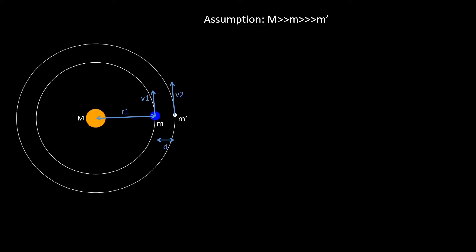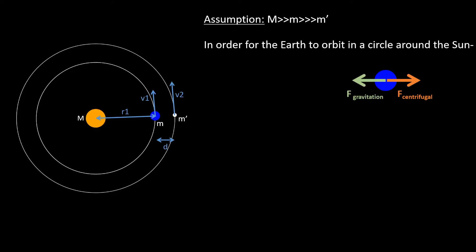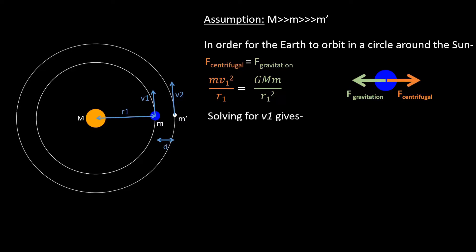As a consequence of that, the satellite will have no appreciable influence on the Sun-Earth system, making it evolve in time almost unaffected by the satellite. For the Earth to orbit in a circle around the Sun, the centrifugal force on Earth must equal the gravitational force on it, which gives m·v1²/r1 = G·M·m/r1², neglecting the influence of m-prime. Solving for v1 gives v1 = √(GM/r1), which is the orbital velocity of Earth. Let's call this equation 1.